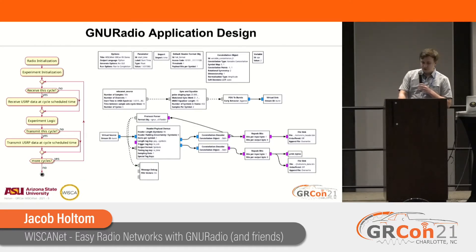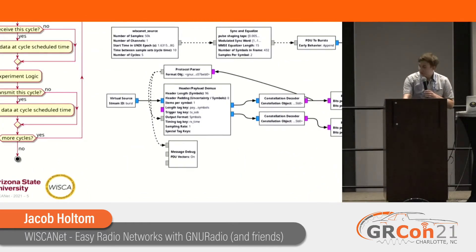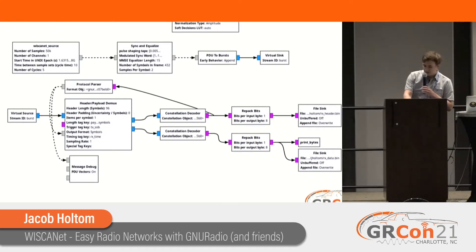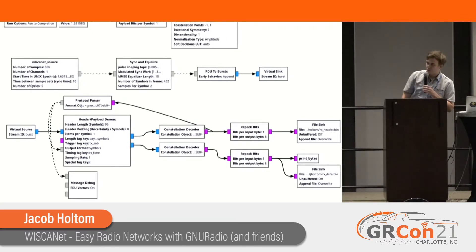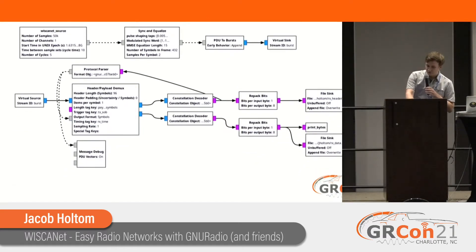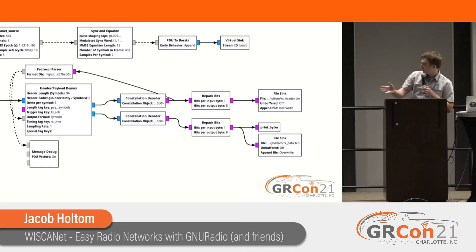In GNU Radio, this flow graph probably looks super familiar to anyone who's done a BPSK or FSK receiver, except I've swapped out the synchronizer and equalizer with a really inefficient version in Python — just to demonstrate that you can do this and take advantage of something closer to the mathematical definition of an algorithm, dump it into your code, demonstrate it works, and then later figure out the optimizations. The rest looks familiar: header payload DMUX, Constellation decoder, repacking and dumping out your data.